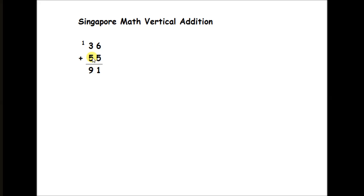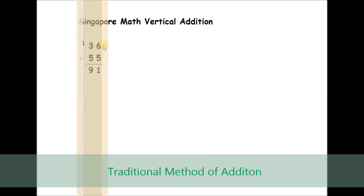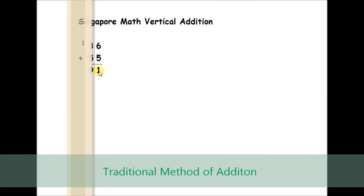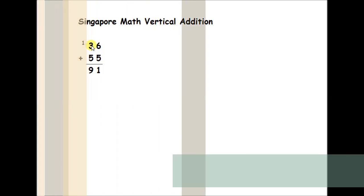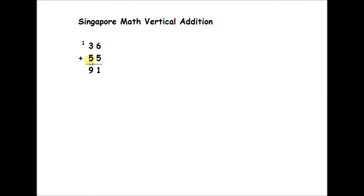Using the traditional method of adding, you would add 6 plus 5 which gives us 11. We would bring down the 1 and carry the 1. Then we would have 3 plus 5 which is 8. And then we would add the 1 that we carried and we would get 91.